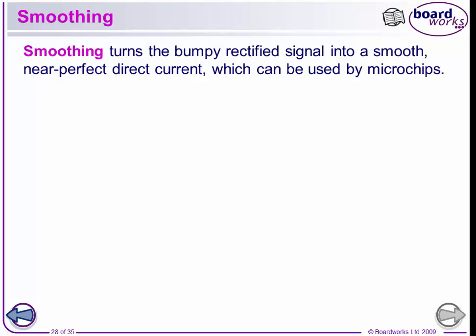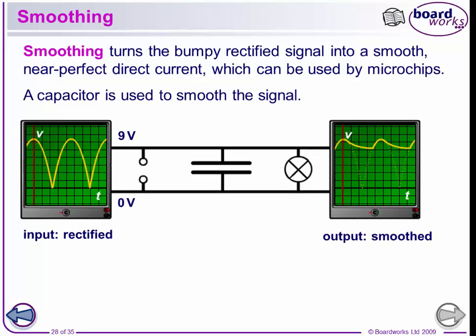Smoothing turns a bumpy, rectified signal into a smooth, near-perfect direct current which the microchips can use. And a capacitor is used to do this.